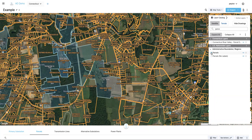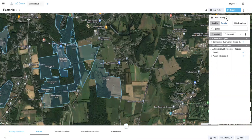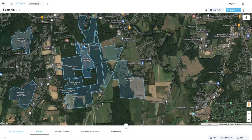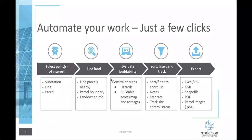I'll turn this layer off and minimize the layer catalog. Now that we have our parcels pulled in, the next step is to evaluate the buildability of these parcels. We'll tell the system what we consider a hazard and what setbacks we want around those hazards, and it's going to run an analysis on the back end and build a constraint map for us. We can check those hazards out, and it'll calculate the buildable acres as well. Let's go ahead and run that.